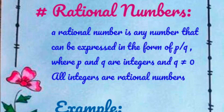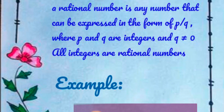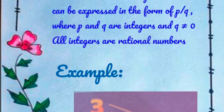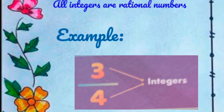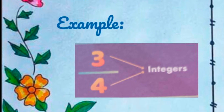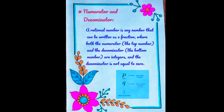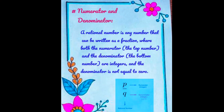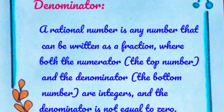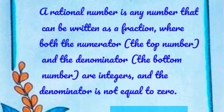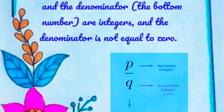The first topic is rational numbers. Here is the meaning and example of rational numbers. The next topic is numerator and denominator. Here is the meaning and example of numerator and denominator.